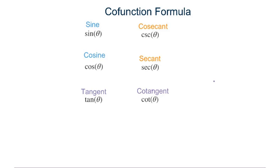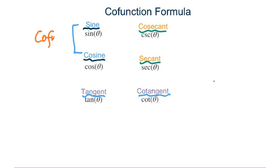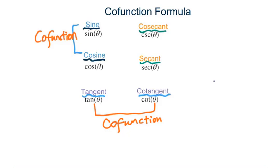Let's talk about the name of each trig function. We have sine and cosine — they are cofunctions. We have tangent and cotangent — they are cofunctions. And we have secant and cosecant — they are cofunctions.